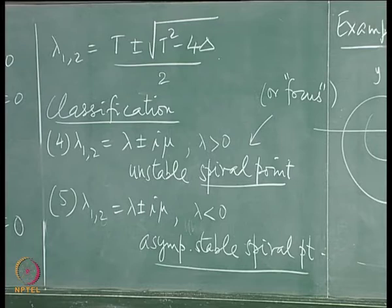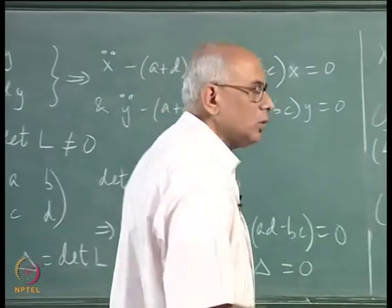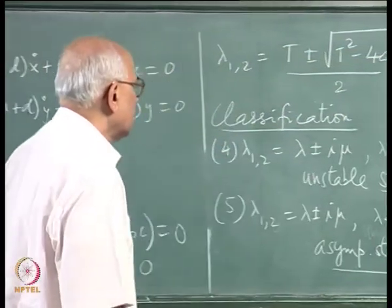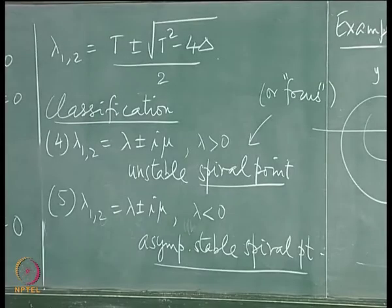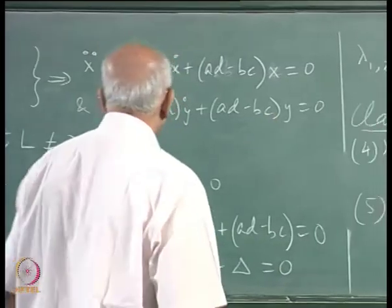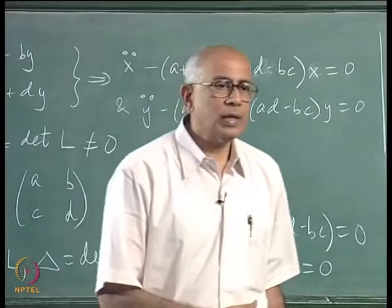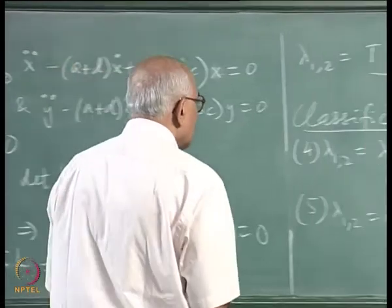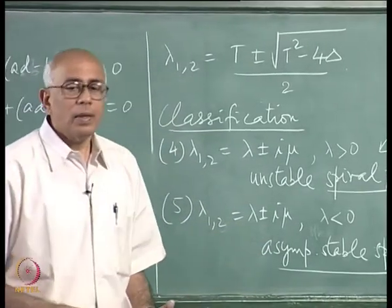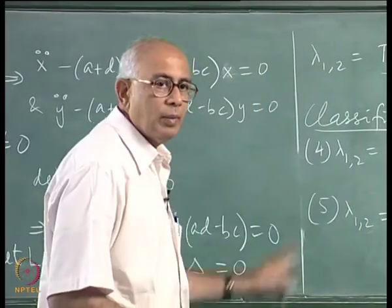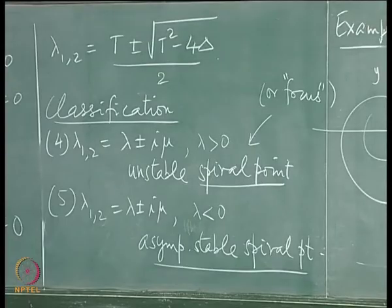There is one more class distinct from the cases considered so far: both eigenvalues are pure imaginary — they form a pure imaginary complex conjugate pair. So λ could have α = 0 and yet det(L) ≠ 0 because the eigenvalues are ±iμ. There are also subclasses within the real eigenvalue cases — two equal positive roots, two equal negative roots, or equal magnitude opposite signs — but the truly distinct new class is pure imaginary eigenvalues.